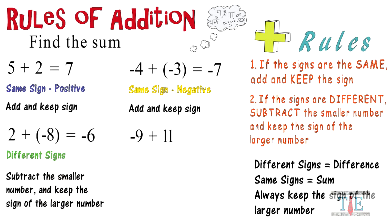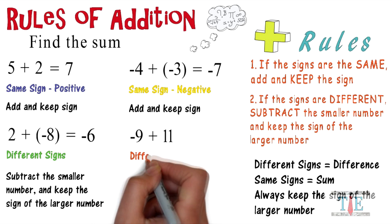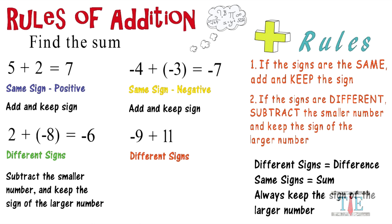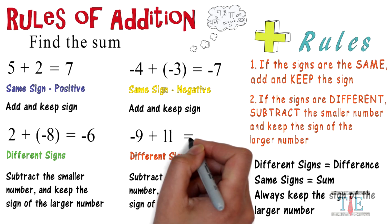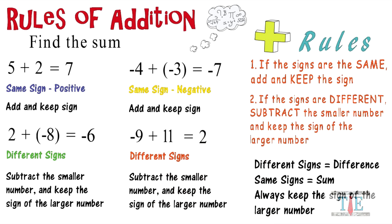Negative nine plus eleven: different signs, positive and negative. So we're going to subtract the smaller number and keep the sign of the larger number. The larger number is eleven, which is positive, so we do eleven minus nine, which is two, positive two. Good work today, guys!